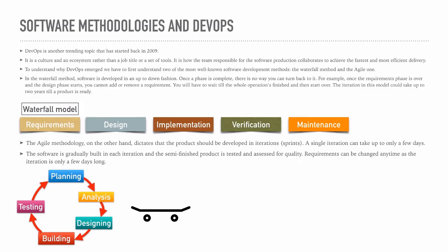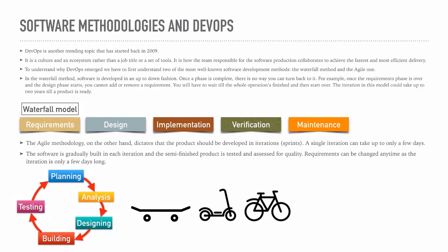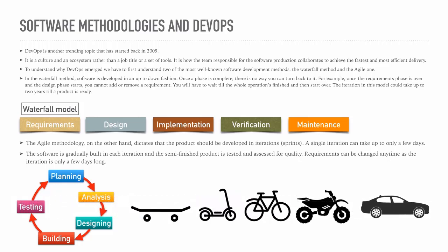Each sprint produces a semi-finished product. For example, if we wanted to build a car using the agile methodology, in the first iteration we create a skateboard, in the second a scooter — which provides more features and is closer to the finished product. The third iteration might produce a bicycle, the fourth a motorbike, and the fifth a car. In each iteration you have something visible and testable, so quality assurance is not done once at the very end — you develop by adding features incrementally.